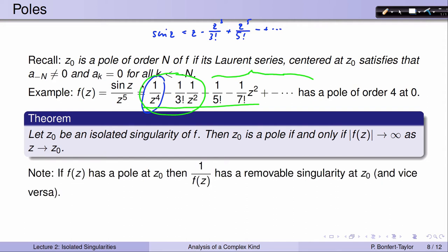By the way, if f has a pole at c0, then you could look at 1/f, and that function will have a removable singularity at c0, and vice versa. Why is that the case? Well, if f has a pole, we know that means the absolute value of f goes to infinity as z approaches c0. By Riemann's theorem on removable singularities, if I look at 1/f(z), because f(z) goes to infinity, 1/f(z) must go to 0. That's clearly a bounded function near c0, and by Riemann's theorem, that means I'm dealing with a removable singularity.